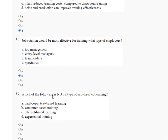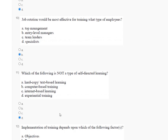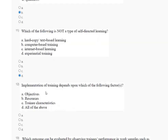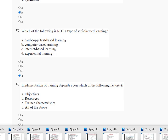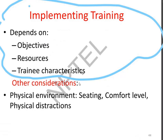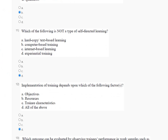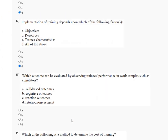Question number 11: which of the following is a noted type of self-directed learning? The correct answer is Option D. Question number 12: implementation of training depends upon which of the following factors? The correct answer is Option D — all of the above. The explanation of question 12 is here.